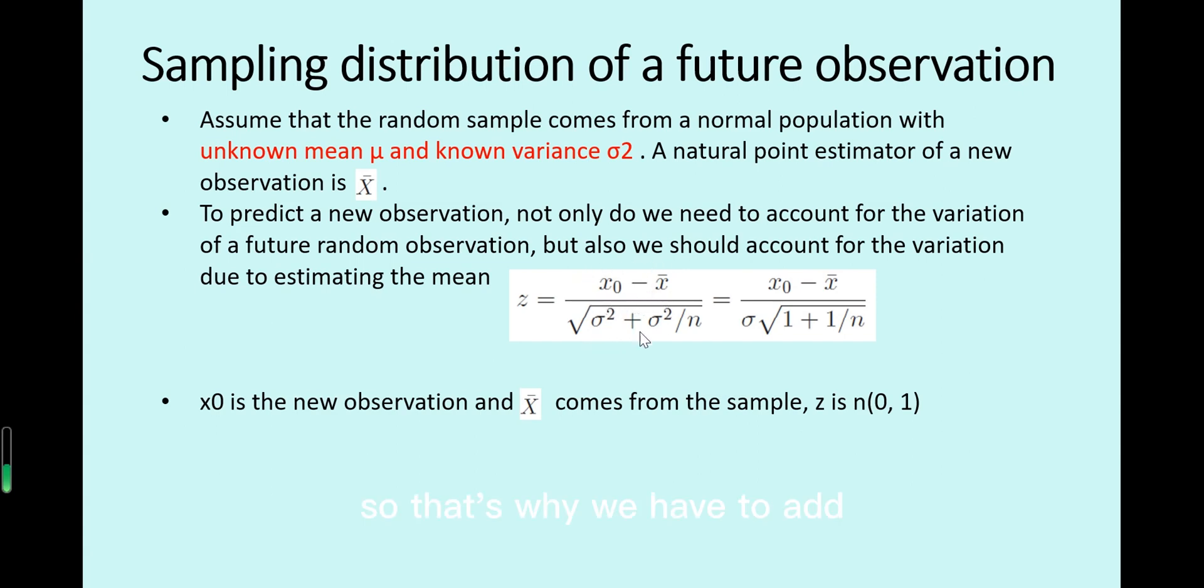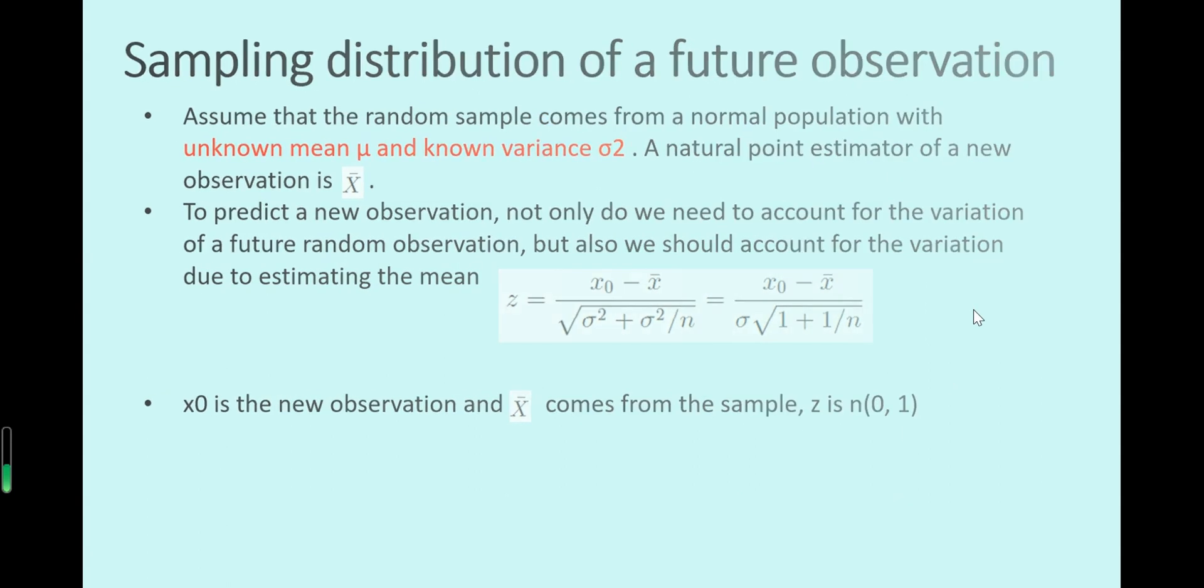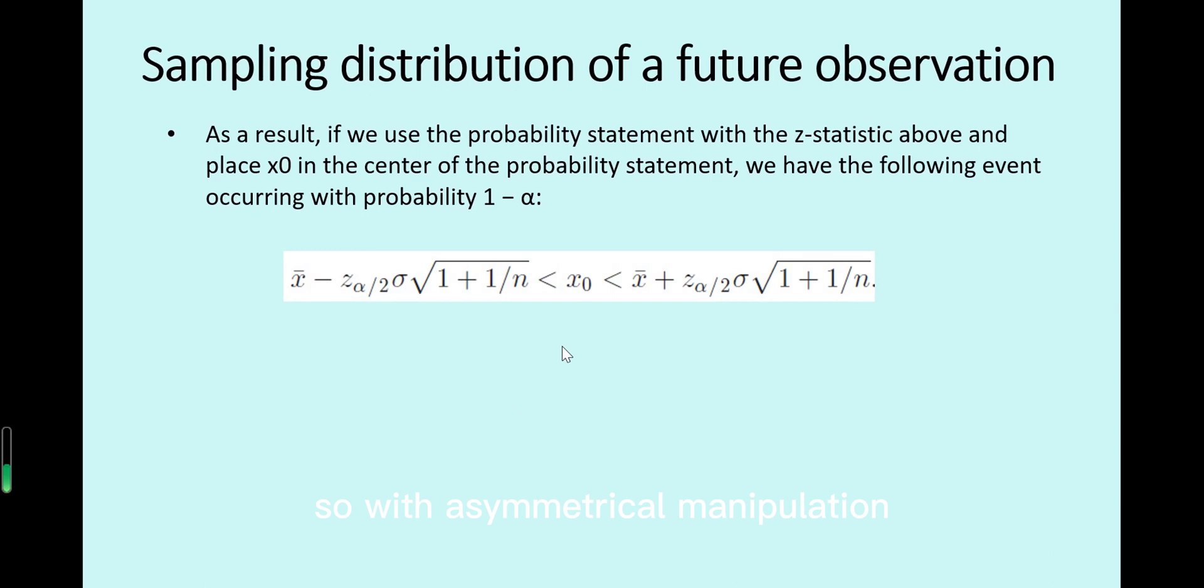So that's why we have to add extra variance to the population variance here to get this standardized value. So with the mathematical manipulation, this is the future prediction and this lower bound and this upper bound will decide the confidence interval at 1 minus α level.